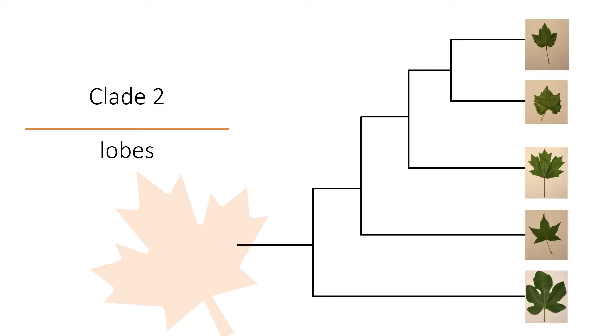The second clade contains leaves with lobes. A lobe is simply a subdivision of the leaf's blade, but the blade is not separated into separate pieces.